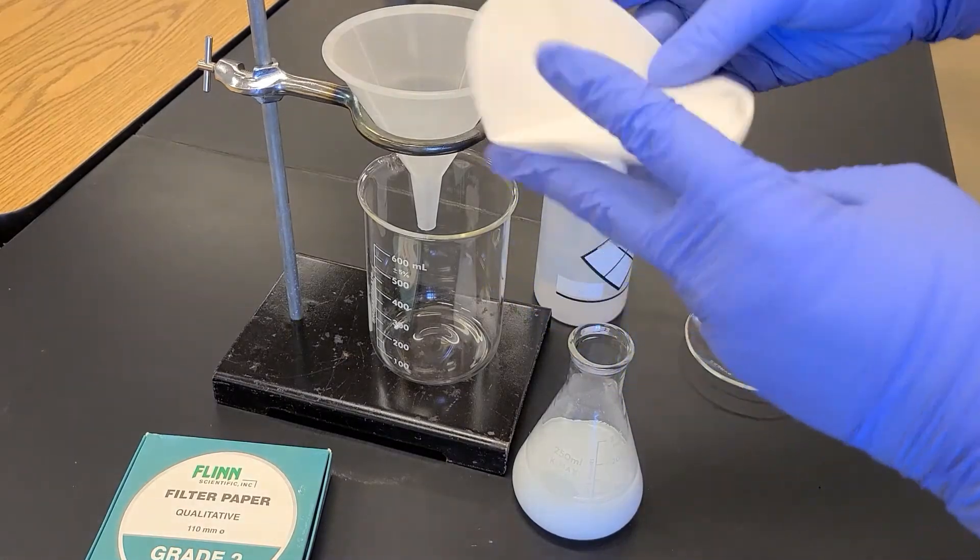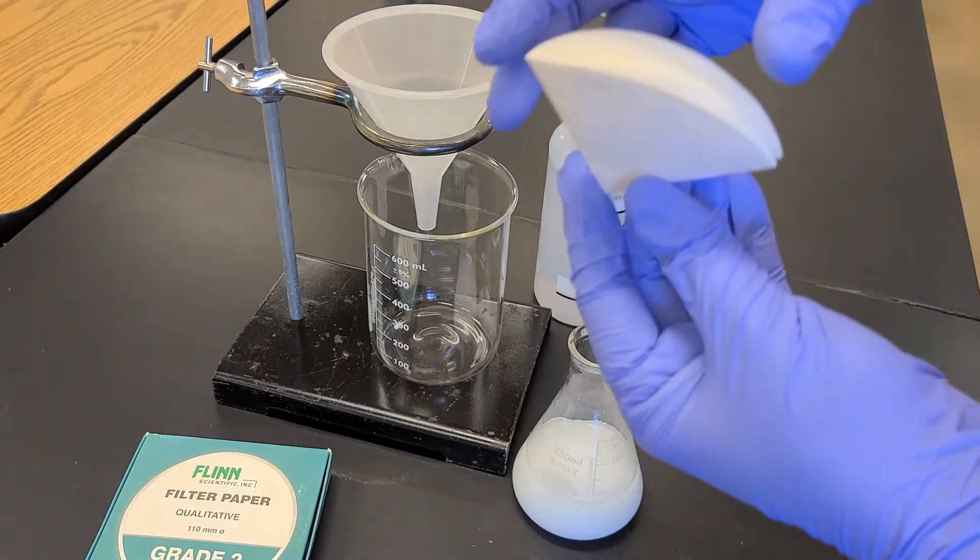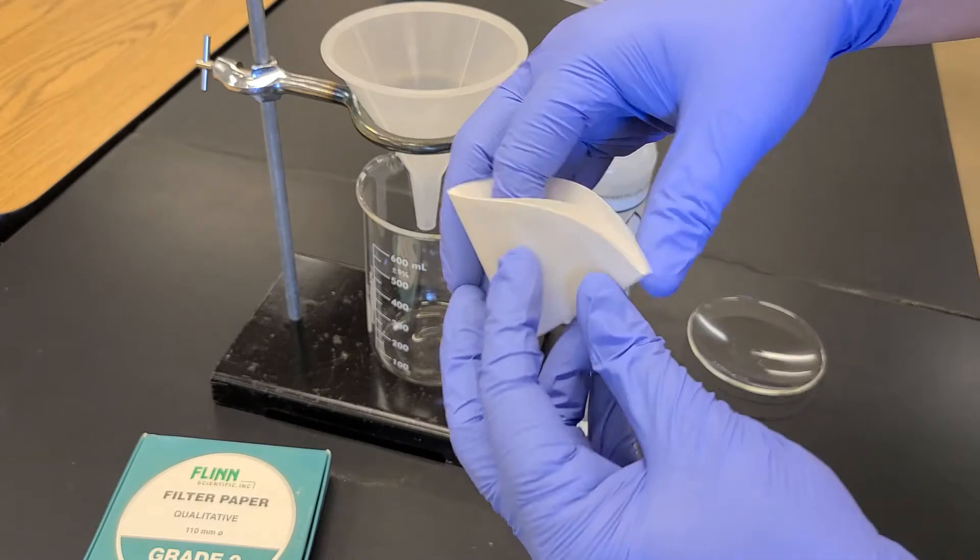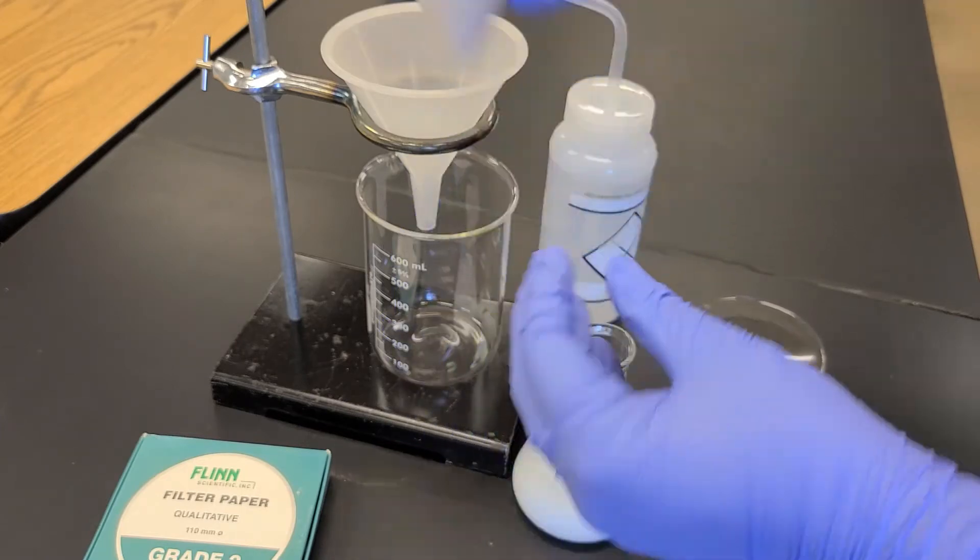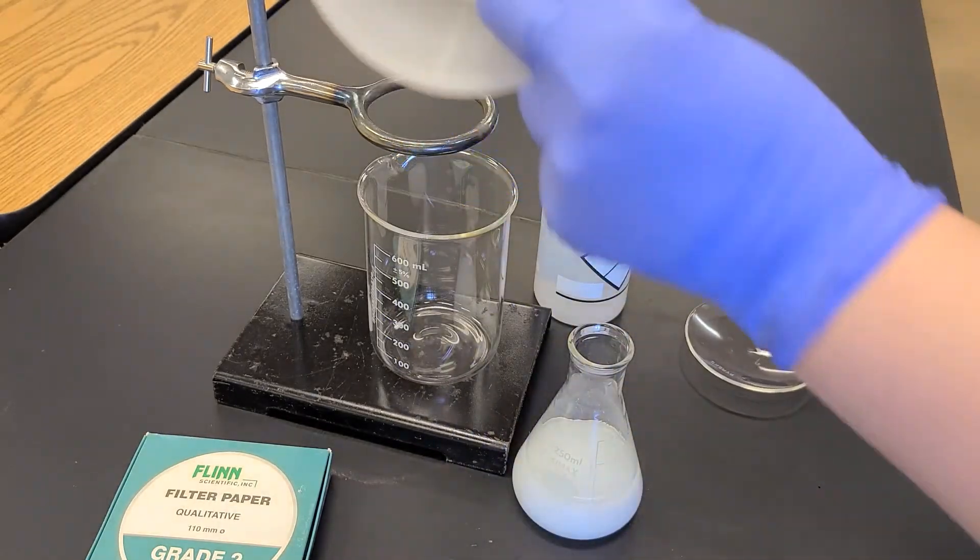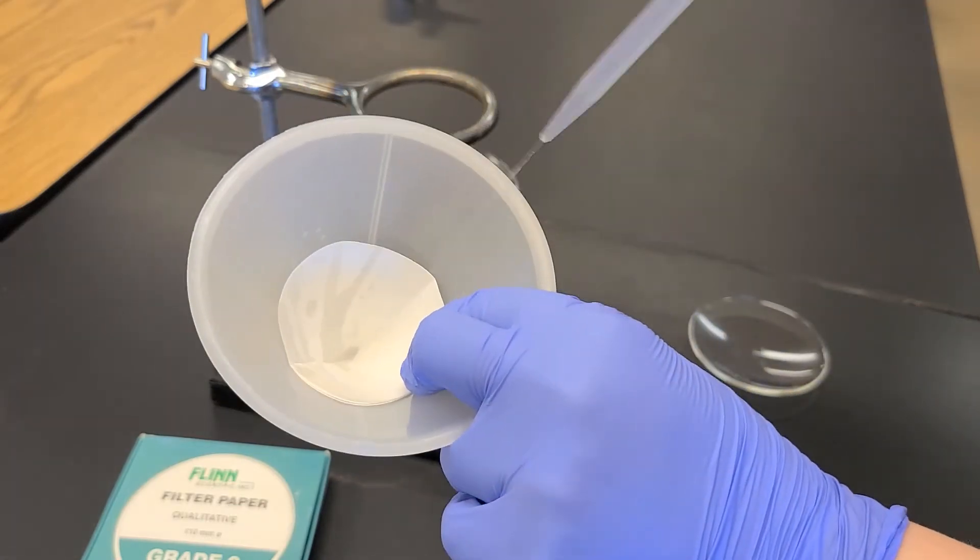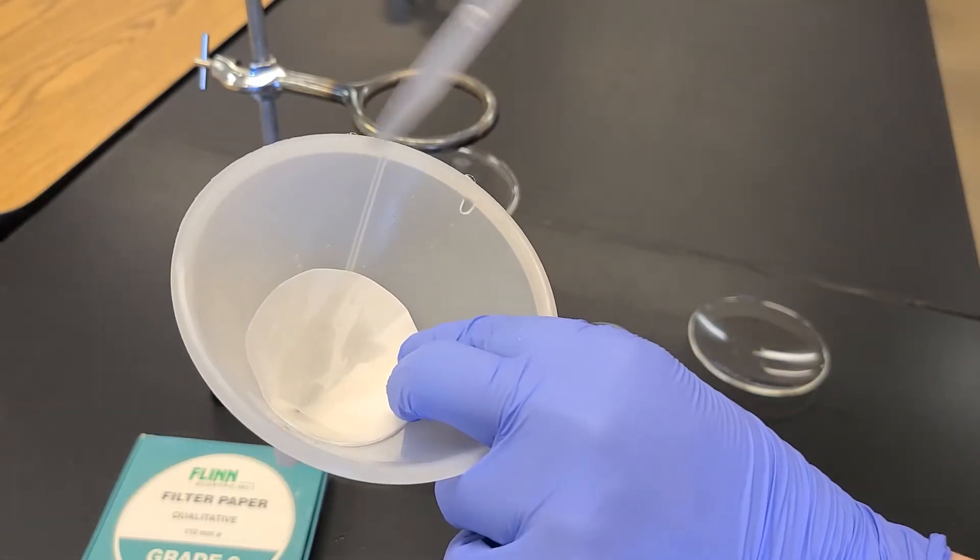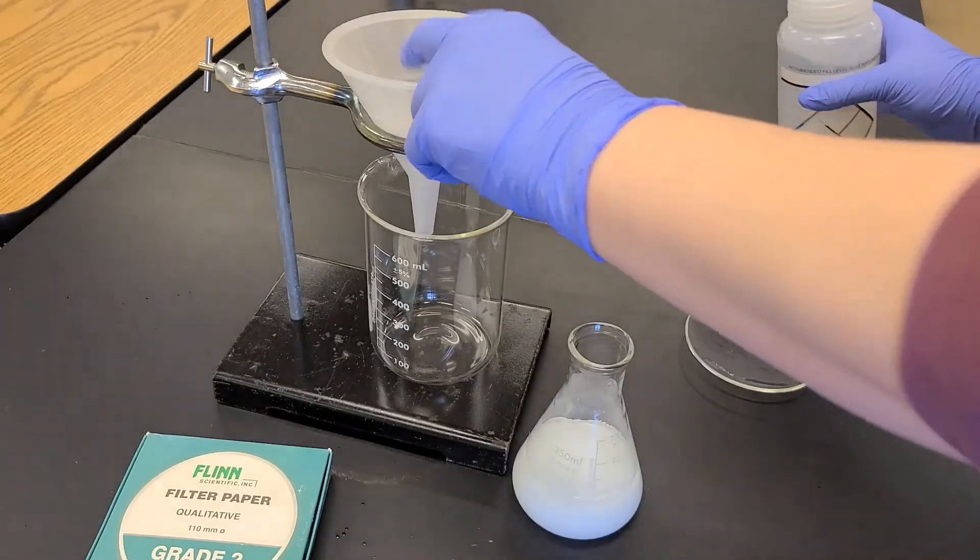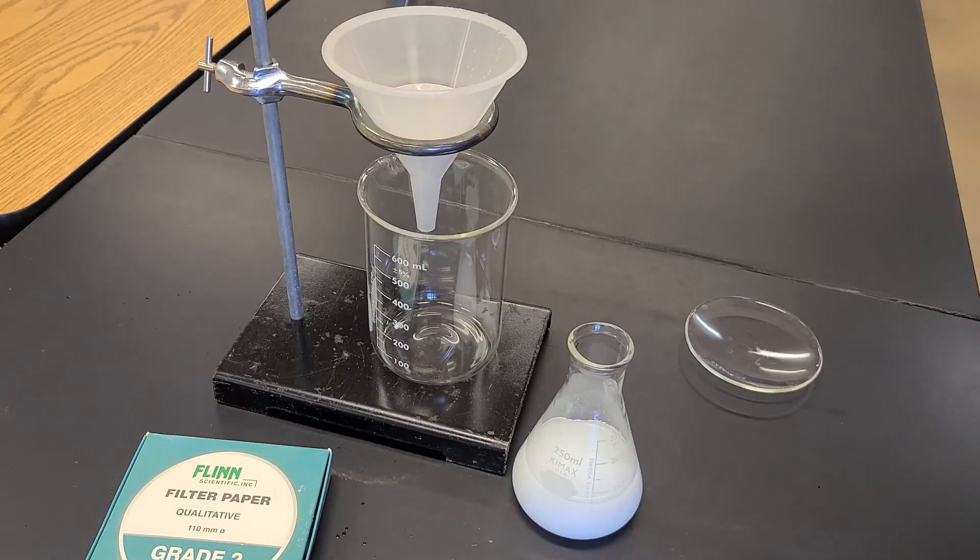Now I'm going to take that filter paper. Again, I want to grab three of the four layers and push open the fourth so I get a nice funnel. I'm going to put this into my plastic funnel and wet it down because that paper wants to come out of the funnel, so I'm just going to wet it so it sticks down in there.